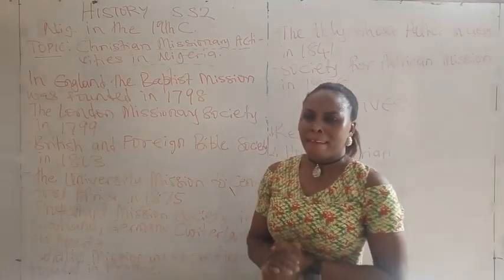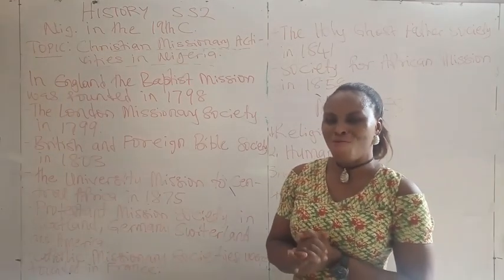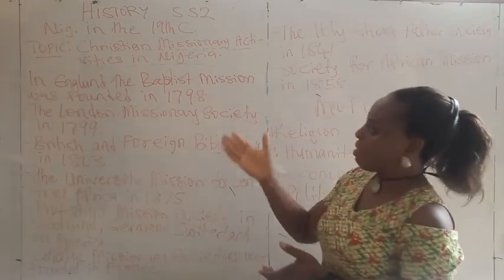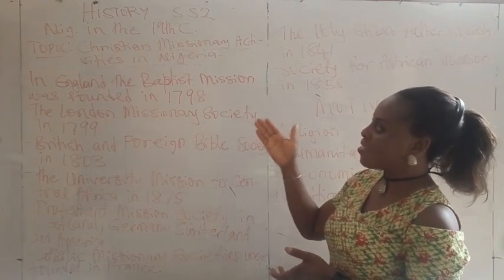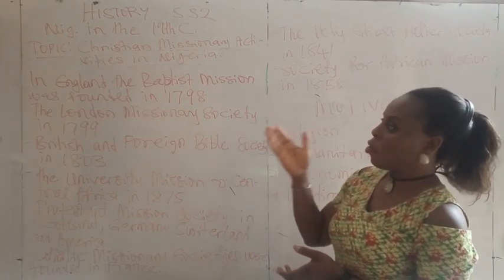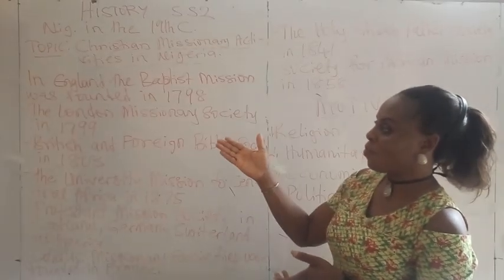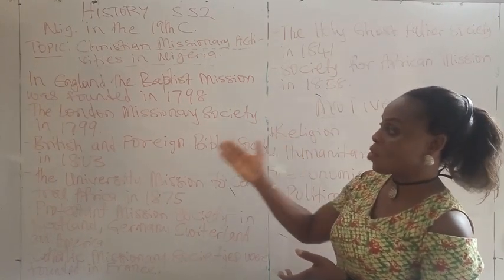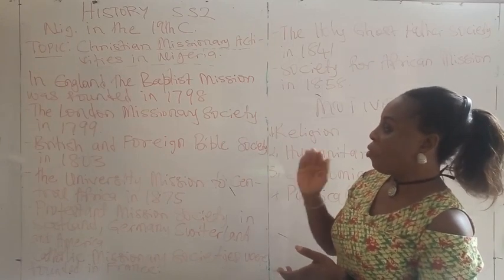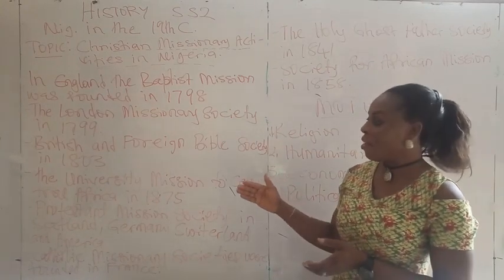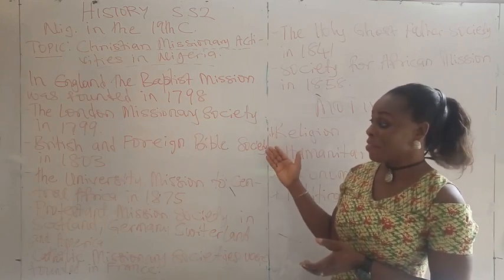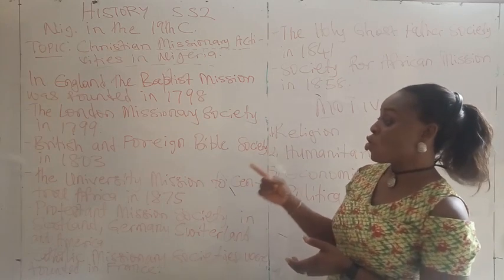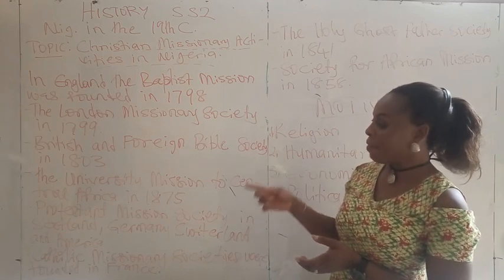That evangelical movement led to the formation of missionary societies. In England, the Baptist Mission was founded in 1798. Then we also have the London Missionary Society, founded in 1799. We have the British and Foreign Bible Society, founded in 1803. We have the University Mission to Central Africa, founded in 1875. Also, the Protestant Mission Society was founded in Scotland, Germany, Switzerland, and America.